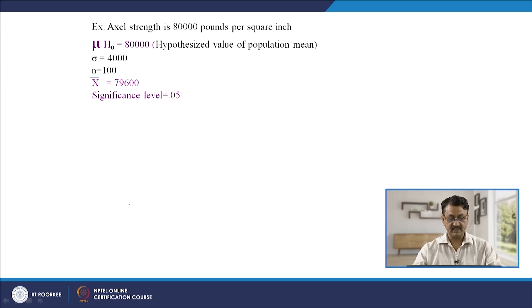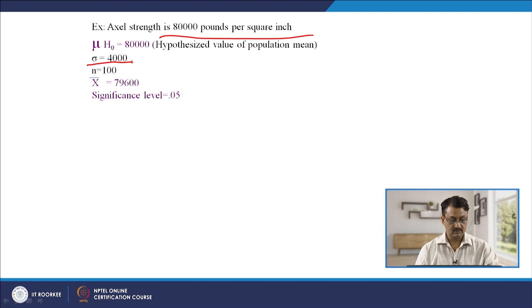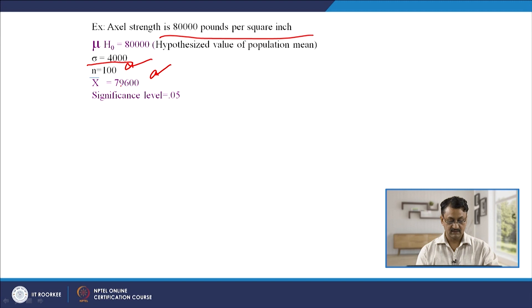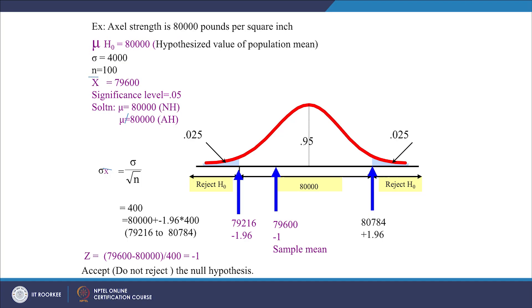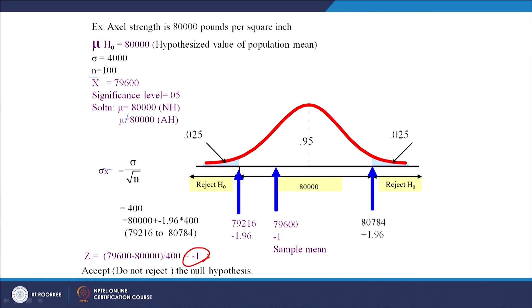Let us look at one more example. Let us say the strength of the XL is 80,000 pounds per square inch and standard deviation is 4,000. When you take a sample of 100 XLs, the sample mean is 79,600 pounds per square inch. Significance level is given, so the Z critical value would be 1.96. The calculated Z value is minus 1. Comparing minus 1 with the upper and lower limits, the calculated Z is in the acceptance region, so we do not reject the null hypothesis — meaning the XL strength is 80,000 pounds per square inch.